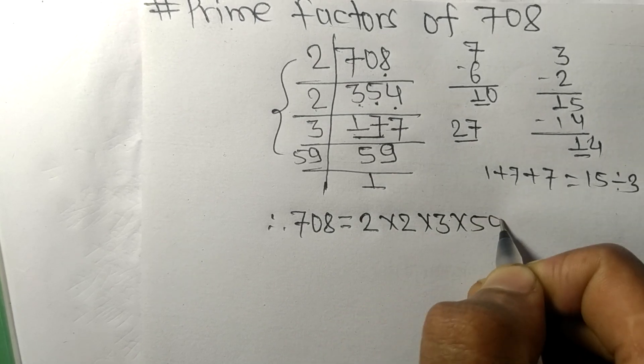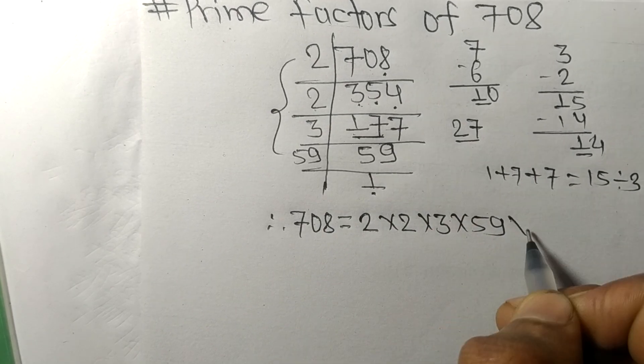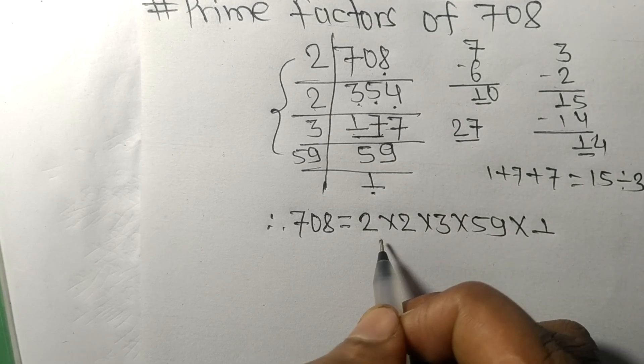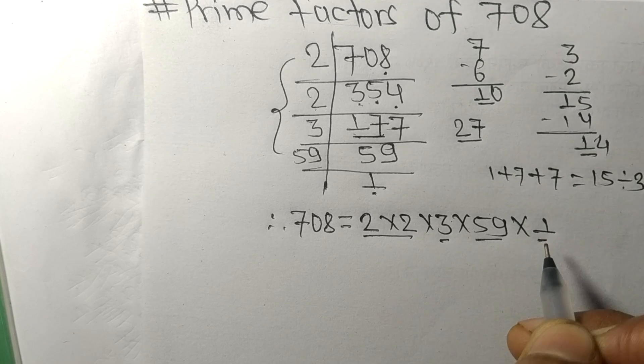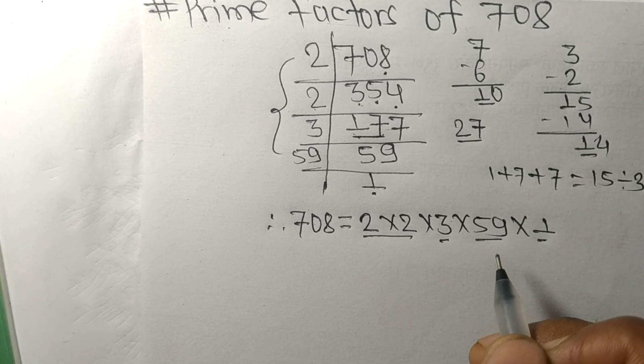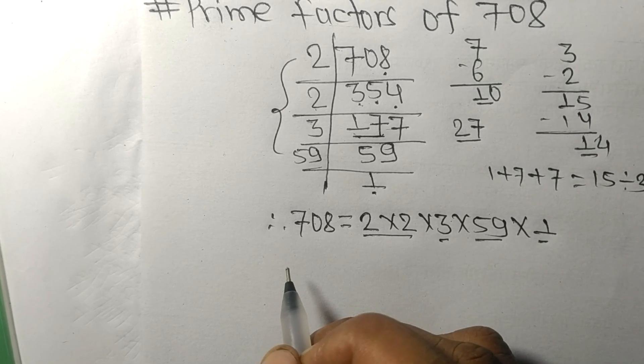And from here it is 1. So these 2, 2, 3, 59, and 1 are the prime factors of 708.